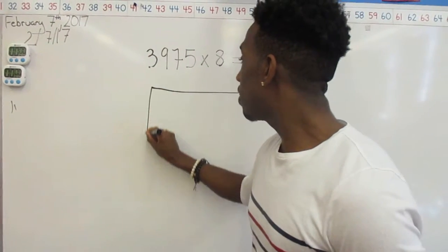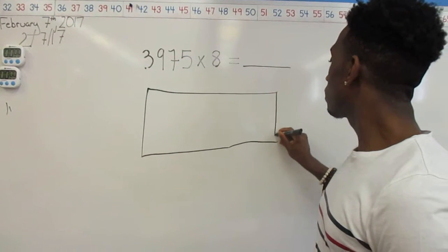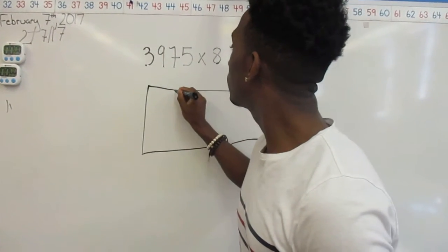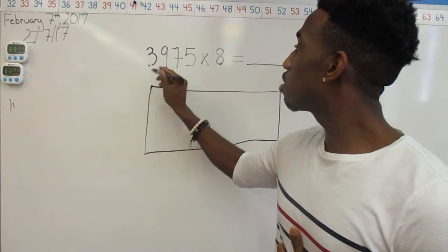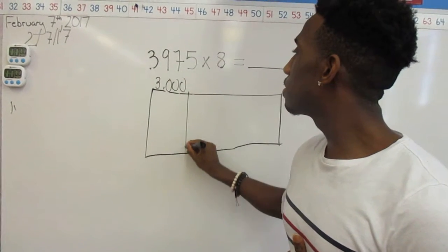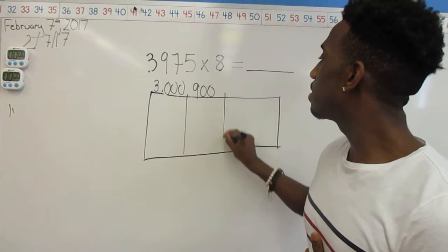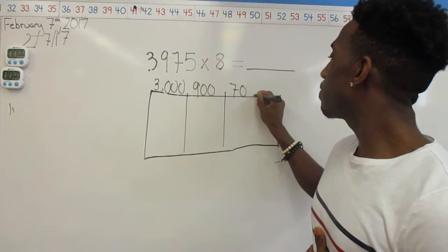So I do this by first drawing a rectangle, and then I'm going to label my side lengths: 3,000, 900, 70, and 5.